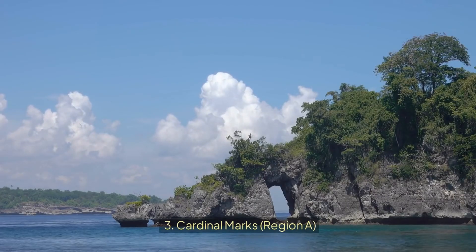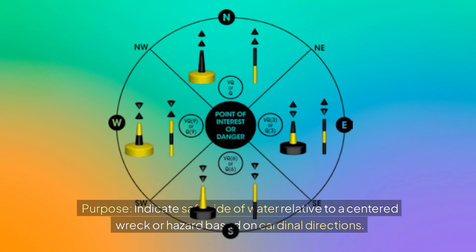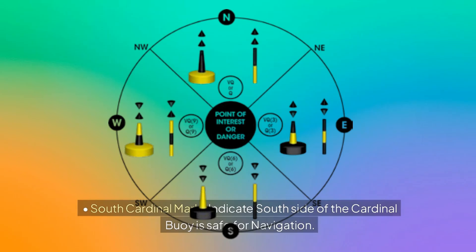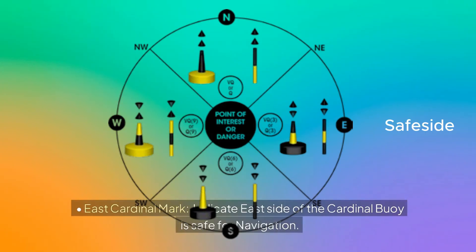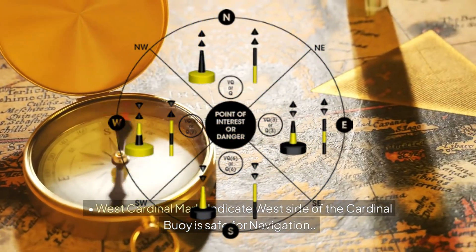Cardinal marks — Region A. Purpose: indicate the safe side of water relative to a centered wreck or hazard, based on cardinal directions. Rules: North cardinal mark — the north side of the buoy is safe for navigation. South cardinal mark — the south side is safe. East cardinal mark — the east side is safe. West cardinal mark — the west side is safe.